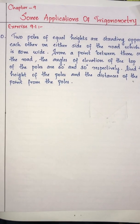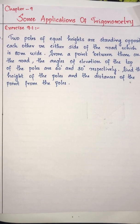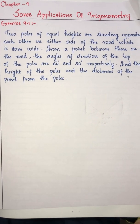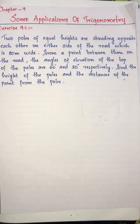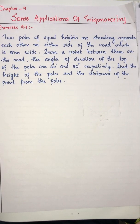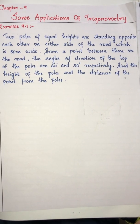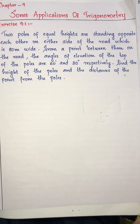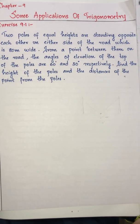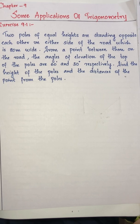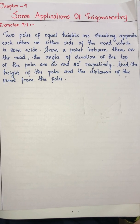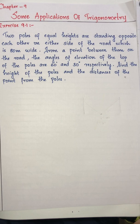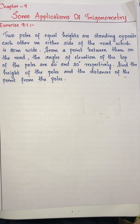Hi students, today let us discuss question number 10 from the chapter 'Some Applications of Trigonometry.' The question is: two poles of equal heights are standing opposite each other on either side of a road which is 80 meters wide. From a point between them on the road, the angles of elevation of the top of the poles are 60 degrees and 30 degrees respectively. Find the height of the poles and the distance of the point from the poles.